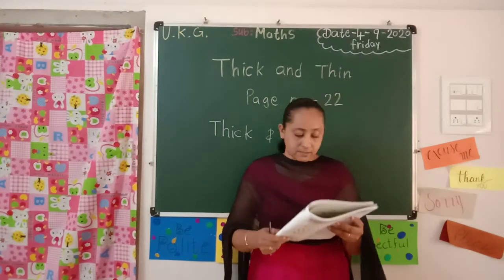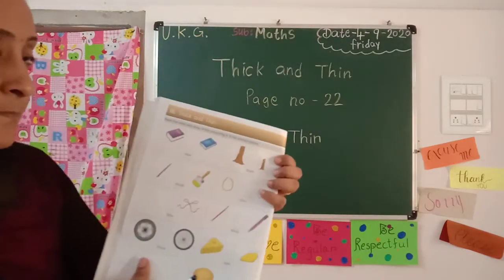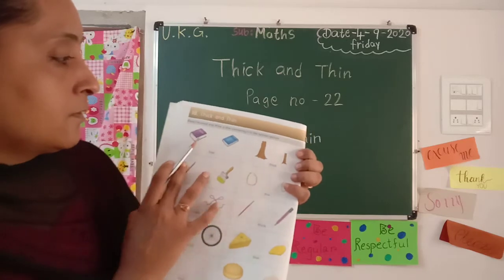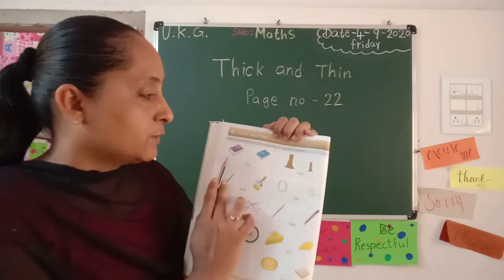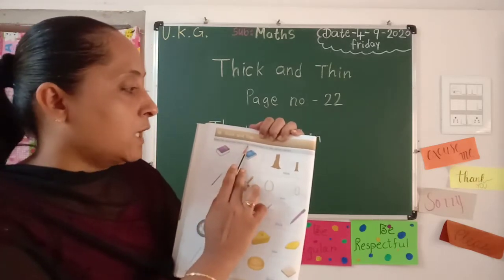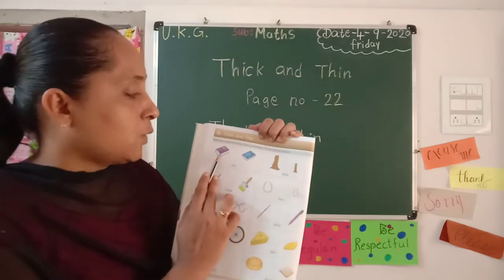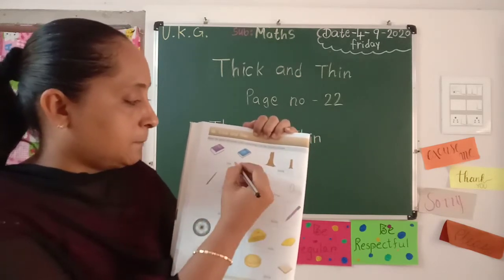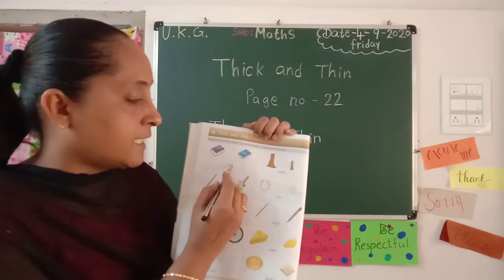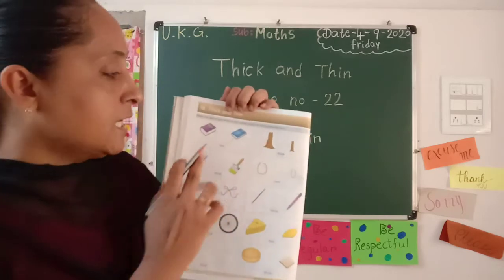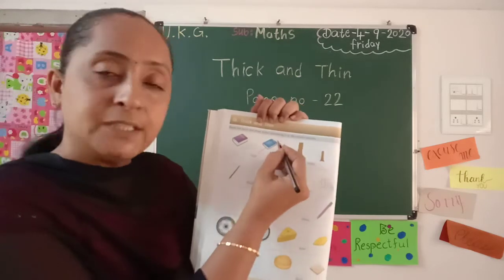Page number 22. Thick. Yes — which picture is this? This is a book. Yahaan pe read the word and draw a line connecting to the correct picture. Yahaan pe thin likha hua hai. Thin pe hume aise tick karna hai. T-H-I-N thin. Thin yani patli book — us pe hume tick karna hai.